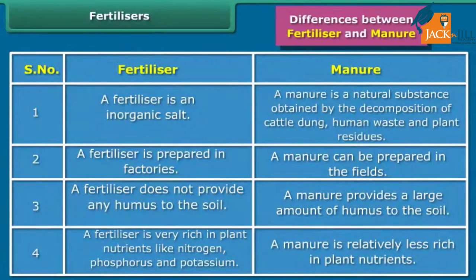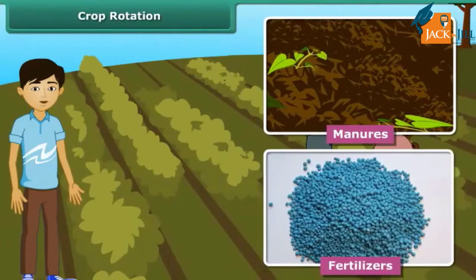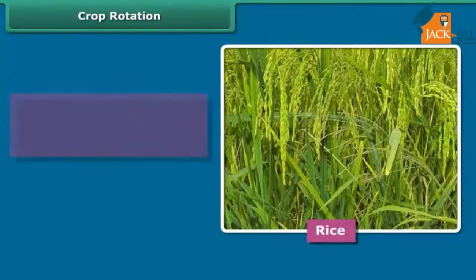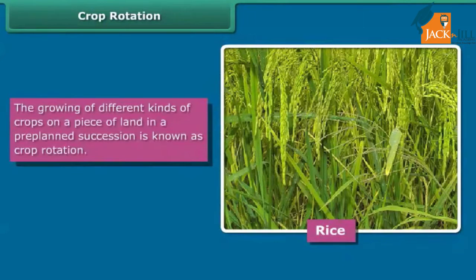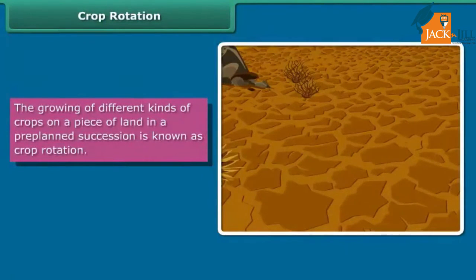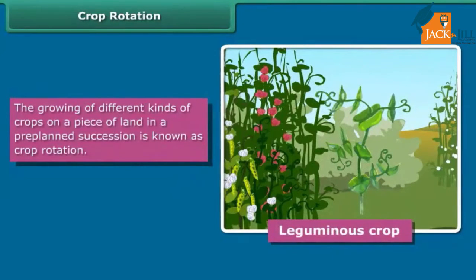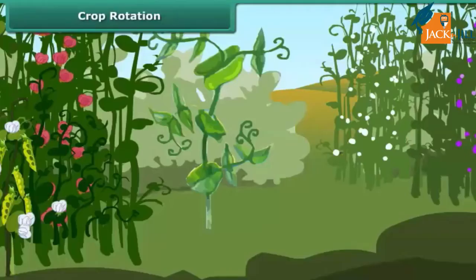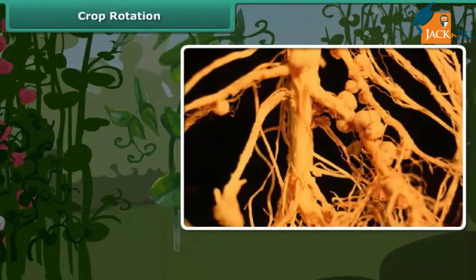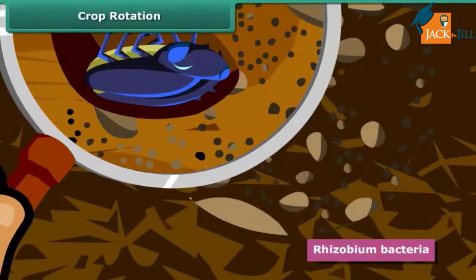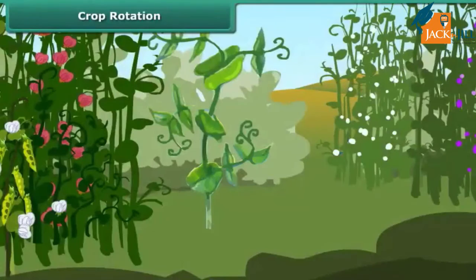Another method of replenishing soil with nutrients is crop rotation. When a cereal crop like rice is grown, it uses up a lot of nitrogenous salts, making the soil nitrogen-deficient. So by rotation, a leguminous crop should be grown after a cereal crop. Rhizobium bacteria present in the root nodules of leguminous plants fix atmospheric nitrogen to form nitrogen compounds, which enrich the soil. Planting leguminous plants thus results in nitrogen-rich soil, increasing food grain production when a cereal is grown next.